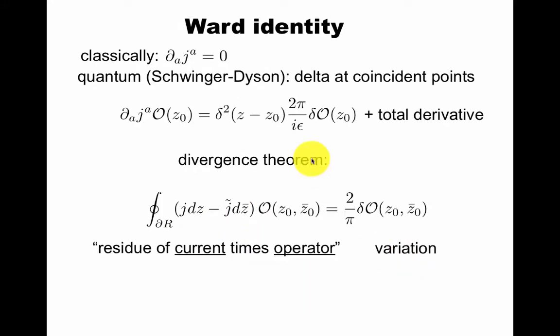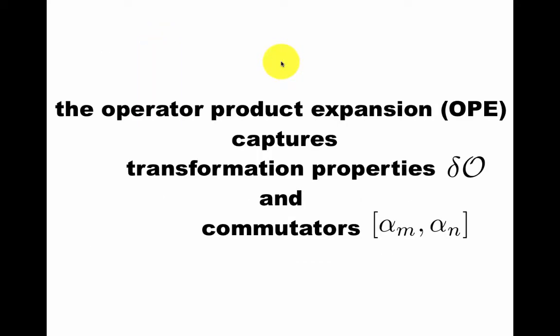How do we implement these symmetries in the quantum theory? Classically, dA jA equals zero. In the quantum mechanical case, we can have a delta function on the right-hand side, where this is the variation of the operator inserted at a point. More concretely, we can use the divergence theorem to rewrite this in terms of an integral of a current times operator. We see the residue here gives us the variation. This directly corresponds to having delta functions in your classical conservation equations. The operator product expansion is the concept that captures transformation properties and commutators.